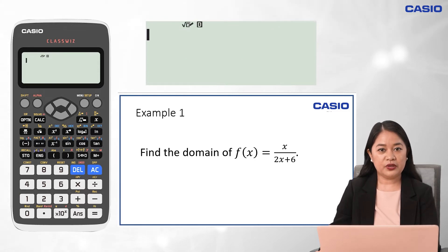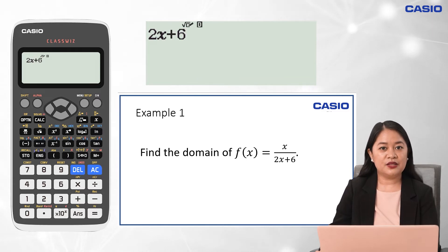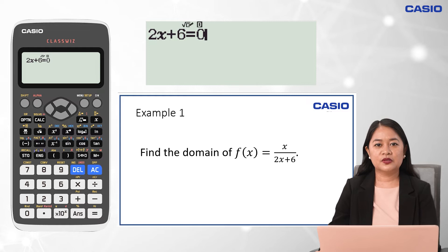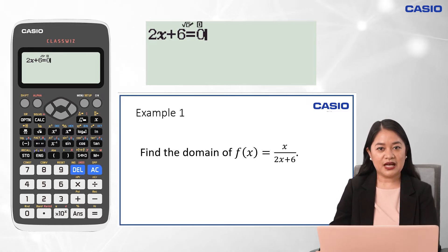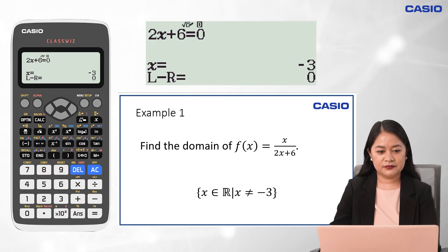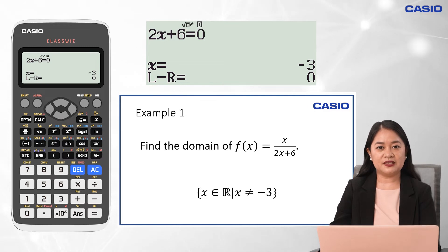Then we input 2x plus 6. Press Alpha and Calc to place an equal symbol on the screen, and then press 0. To automatically compute for x of this equation, press Shift, Calc, and Equal buttons. So, the domain of f is the set of real numbers except negative 3.